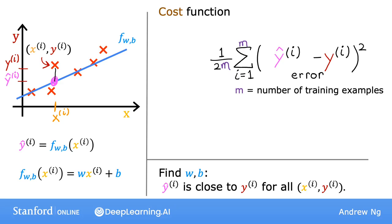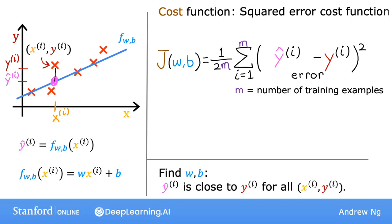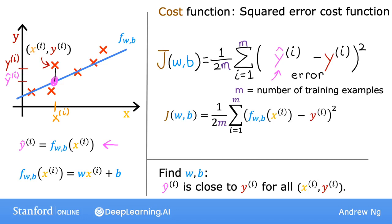The cost function still works whether you include this division by 2 or not. This expression is the cost function, and we write J of w, b to refer to it. This is also called the squared error cost function, because you're taking the square of these error terms. The squared error cost function is by far the most commonly used one for linear regression and for all regression problems, where it seems to give good results for many applications. We can rewrite J of w, b as 1 over 2m times the sum from i equals 1 to m of f of x_i minus y_i, the quantity squared.